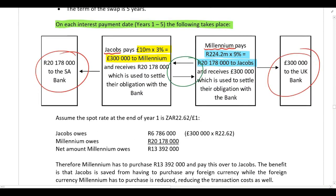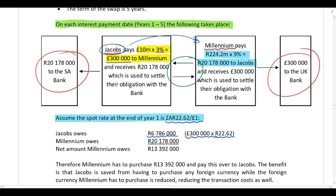At the end of year one, assume the swap rate is 22.162 rand to one pound. Jacobs pays interest at 3%, so they pay 300,000 pounds to Millennium. Since Jacobs is a South African company, they take rands to their bank and convert them into pounds. Using that exchange rate, they take 6,786,000 rand to their bank, which gives them the 300,000 pounds they need to pay Millennium.